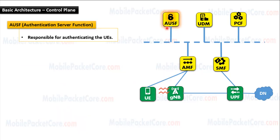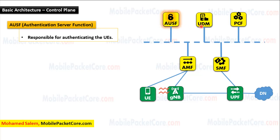Next, let's learn the AUSF. The AUSF refers to Authentication Server Function. The AUSF is responsible to authenticate the UEs. The AMF connects to the AUSF in order to authenticate the UE, and during the authentication procedure, the AUSF may connect to the UDM. So the main function of the AUSF is to authenticate the UEs.